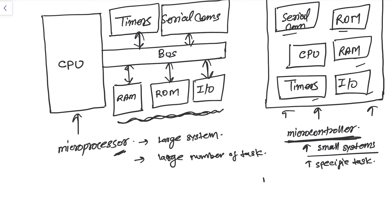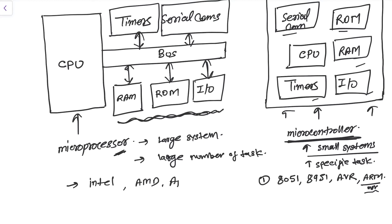Examples of microcontrollers include the 8051, 8951, AVR, and ARM — though ARM is a kind of hybrid, as it covers both microcontroller and microprocessor categories. Examples of microprocessors include Intel, AMD, Apple chips, Qualcomm processors, Broadcom processors, and ARM processors, which all fall into the microprocessor category.